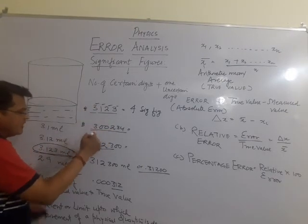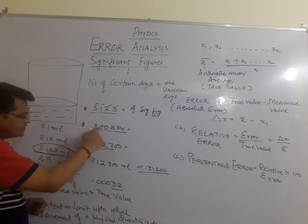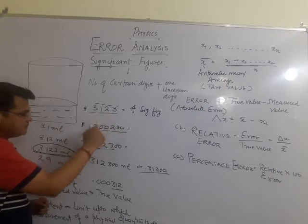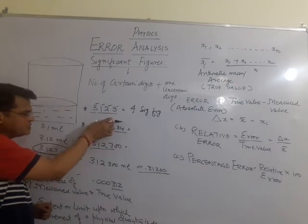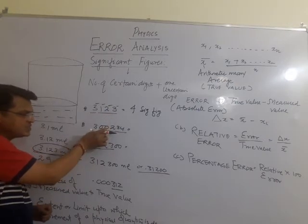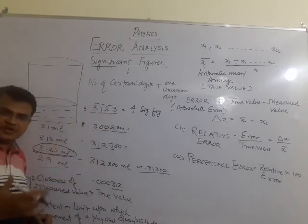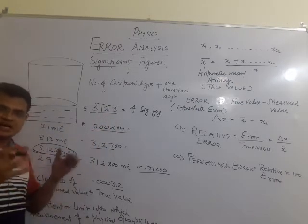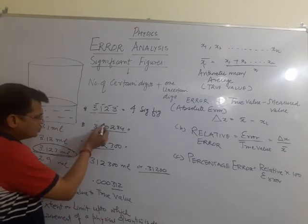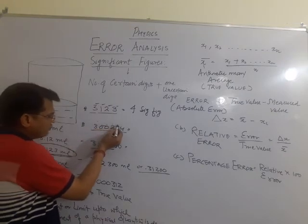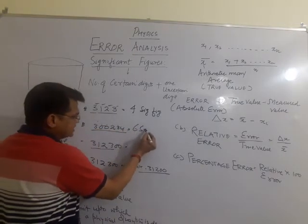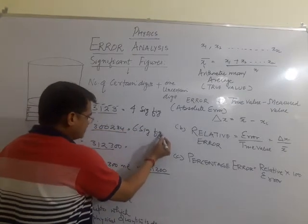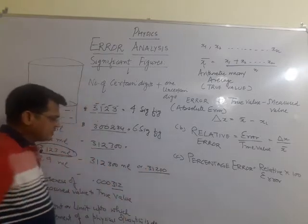The second rule: all the zeros lying between two non-zero digits are significant. For example, 1, 2, 3, 4, 5, 6 — it has six significant figures.